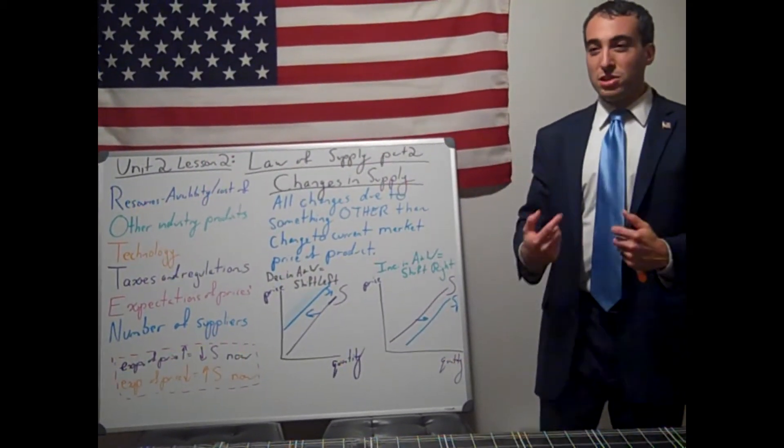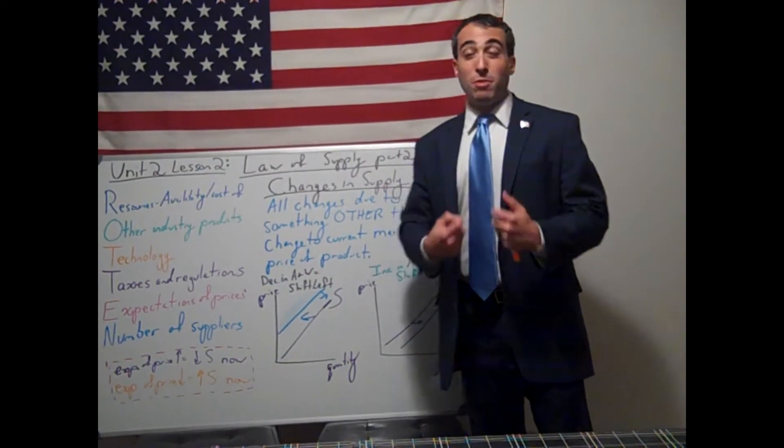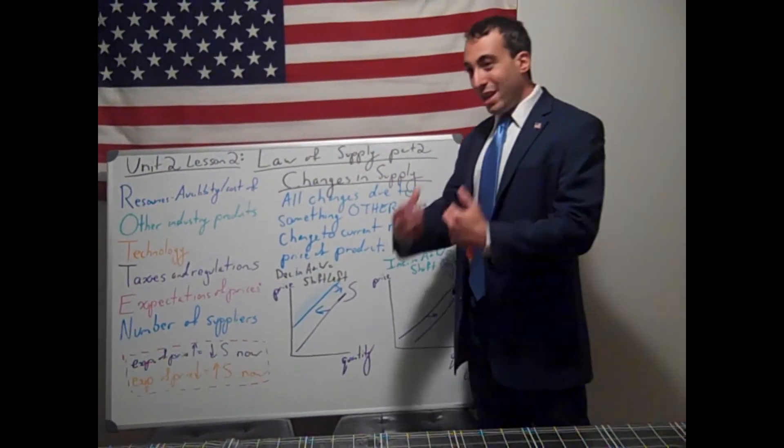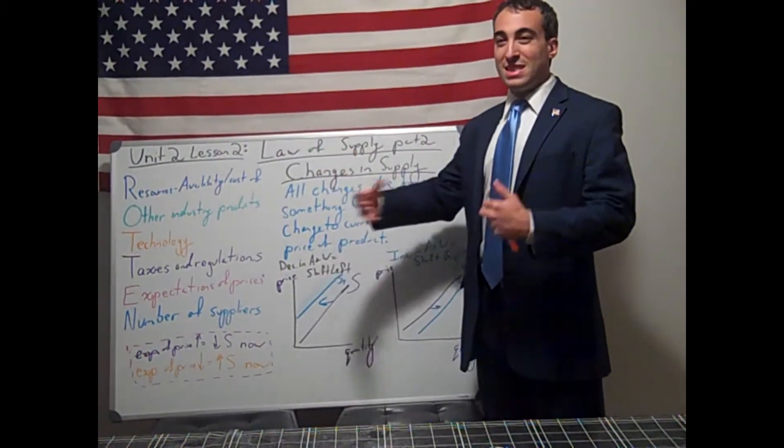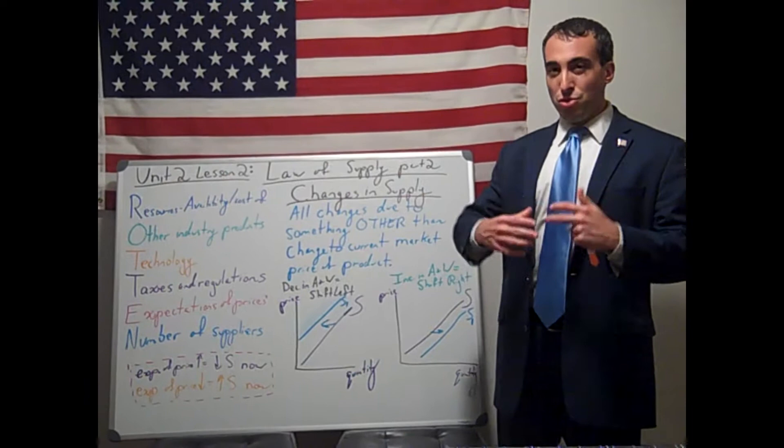If you believe that the flow of the dollar starts in the product market, you would probably be more for minimum wage because that is increasing the disposable income of households in the product market to then purchase products. If you believe, though, that the flow of the dollar starts in the factor market, a higher minimum wage is something you would probably not agree with because that is raising input costs. That's decreasing a business's ability and willingness to supply.